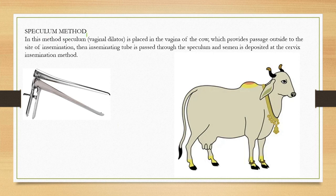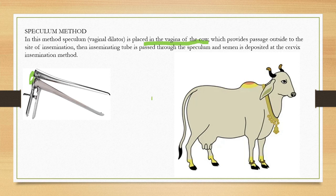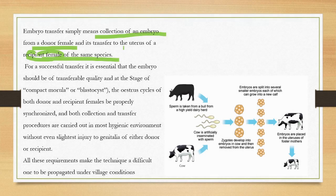In the speculum method, a vaginal dilator is placed in the vaginal cavity, which provides a passage for insemination. The inseminating tube is passed through the speculum and semen is deposited at the cervix. In the vaginal method, sperms are introduced directly into the vagina of the recipient female.